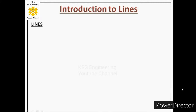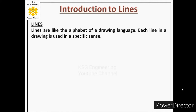Engineering drawing is also a language. We call it a graphical language. So if we want to learn engineering drawing, we need to first get familiar with the alphabet of this particular language. The alphabet for engineering drawing are lines. Lines are like the alphabet of a drawing language, and each line in a drawing is used in a specific sense.